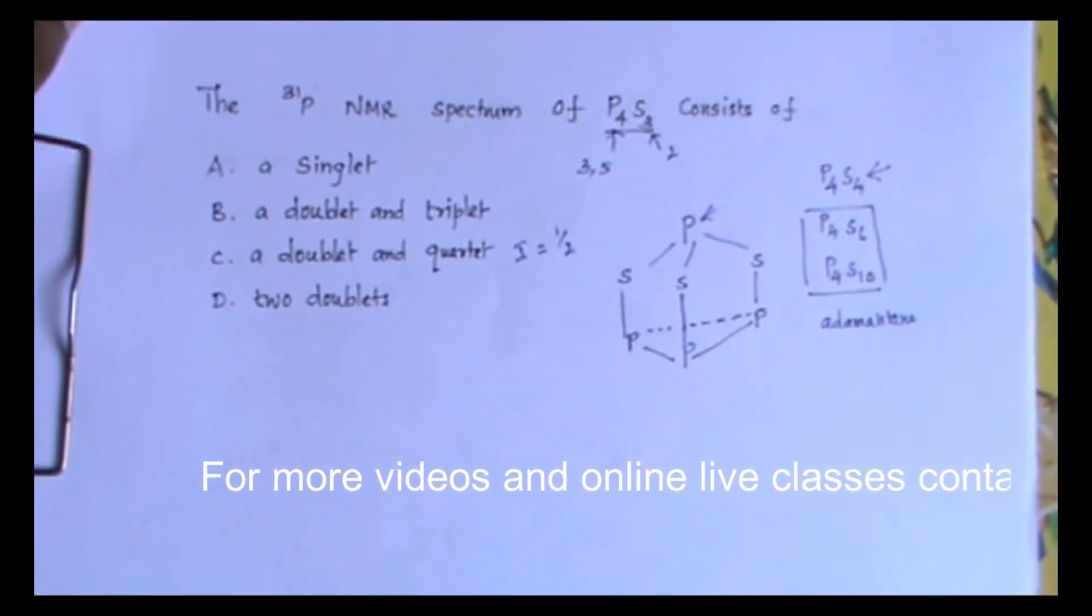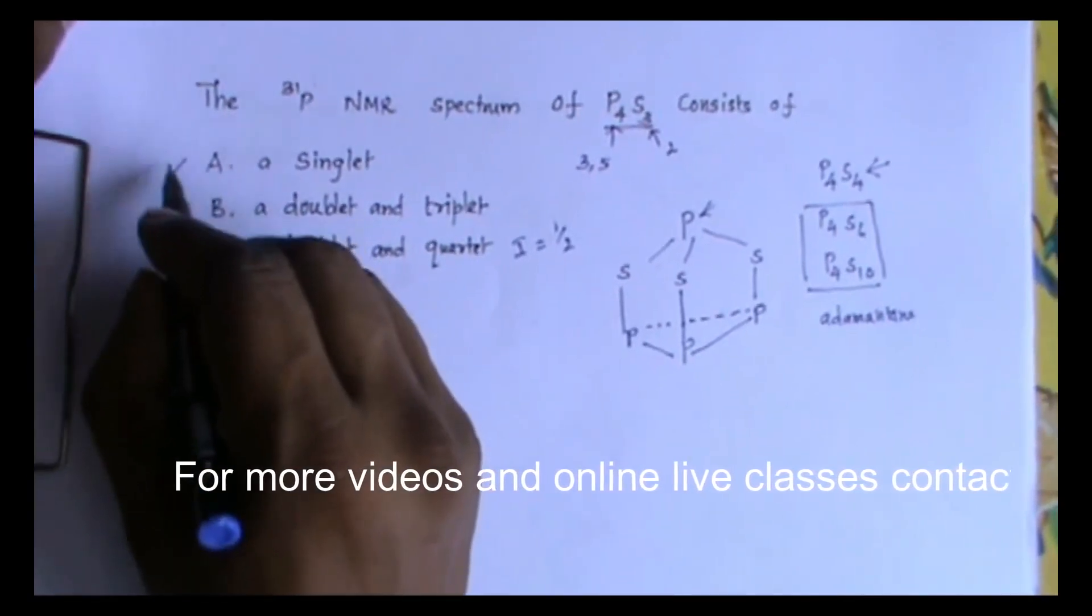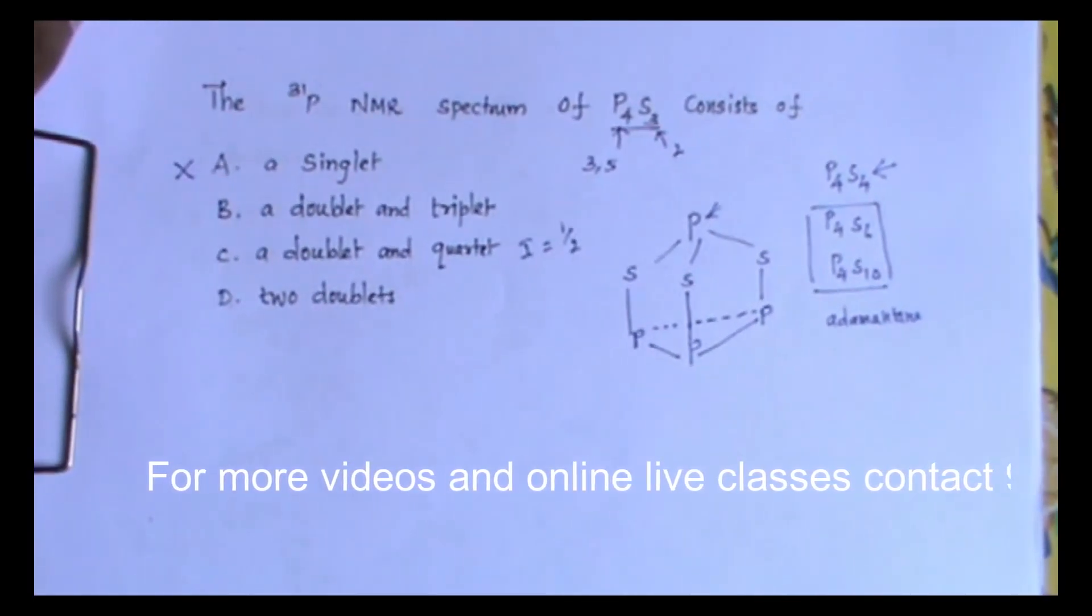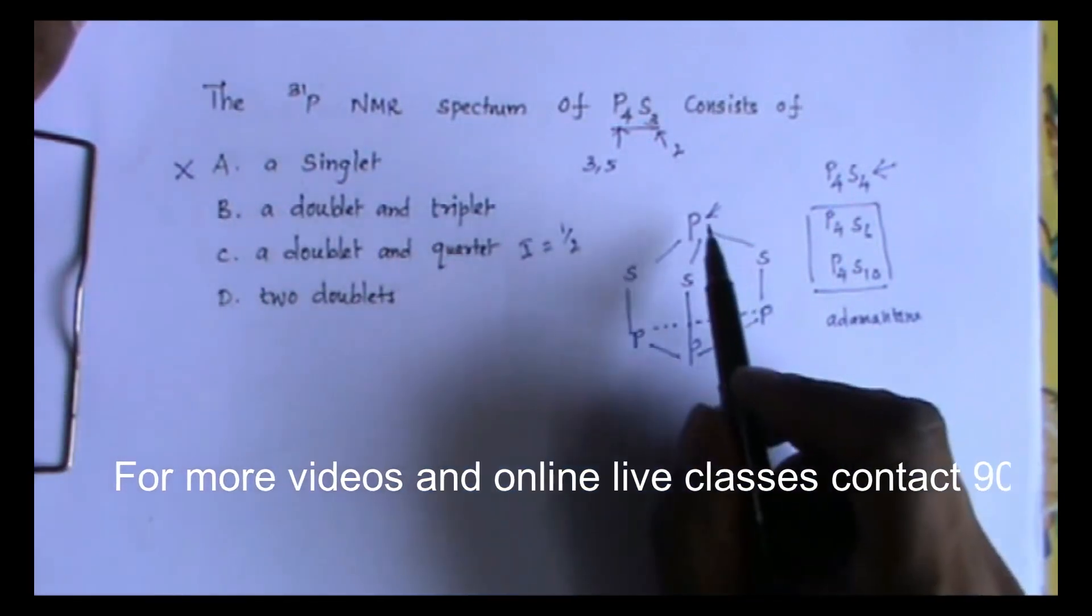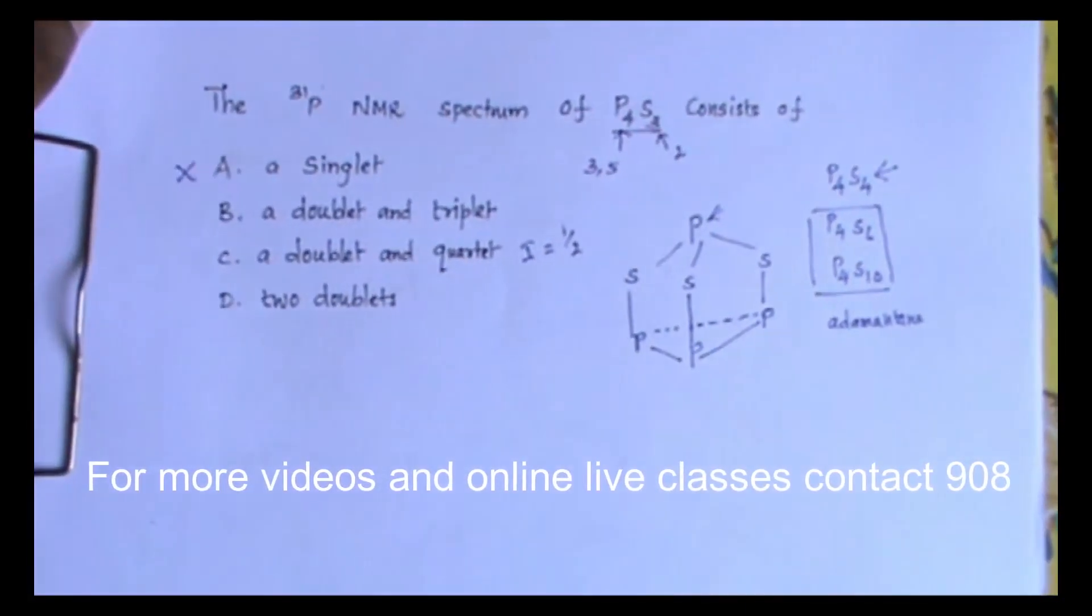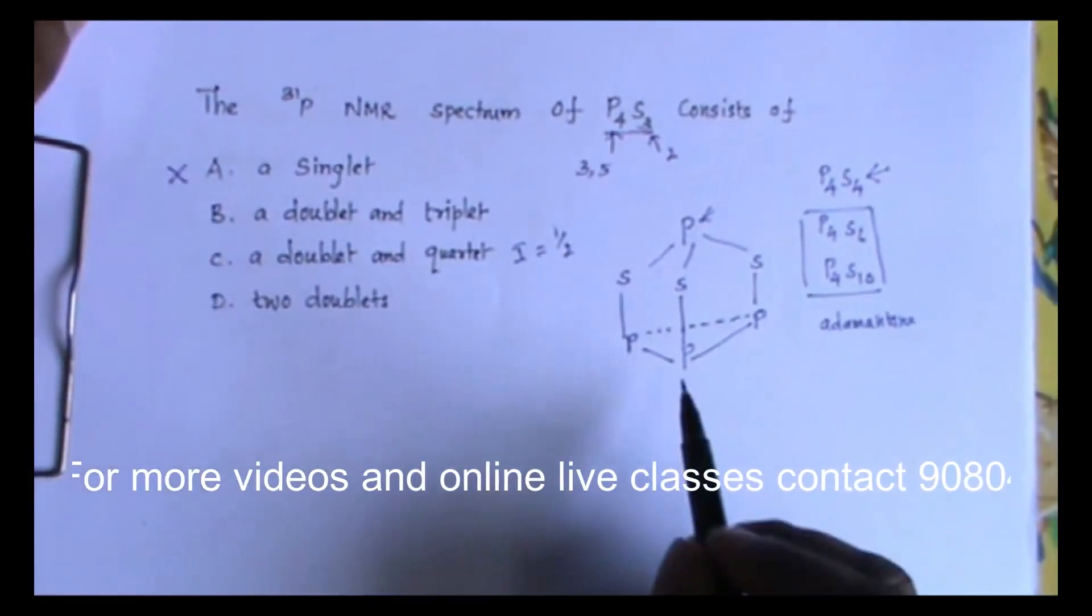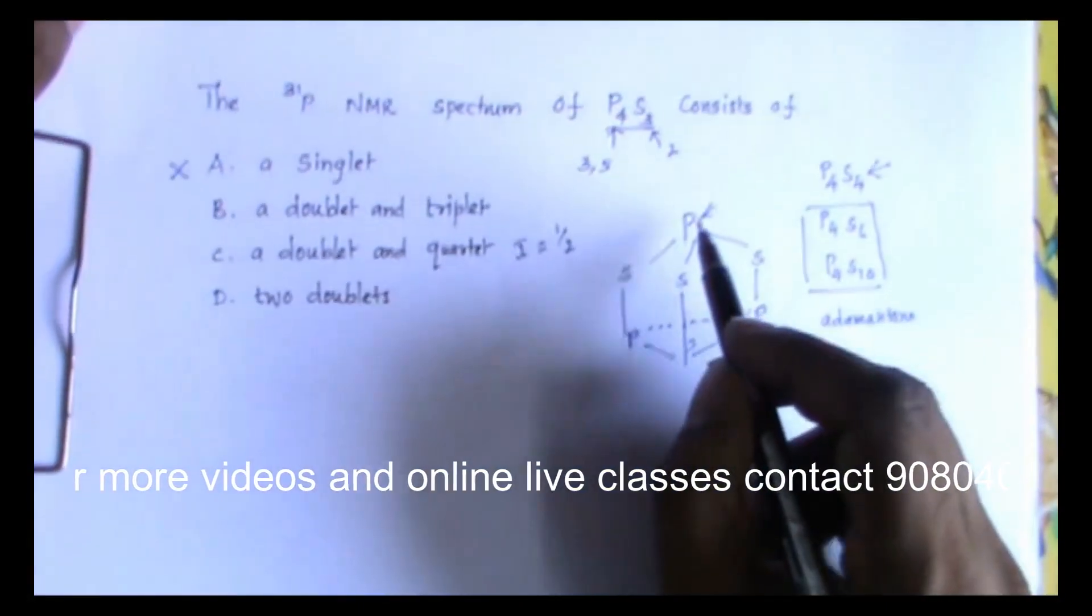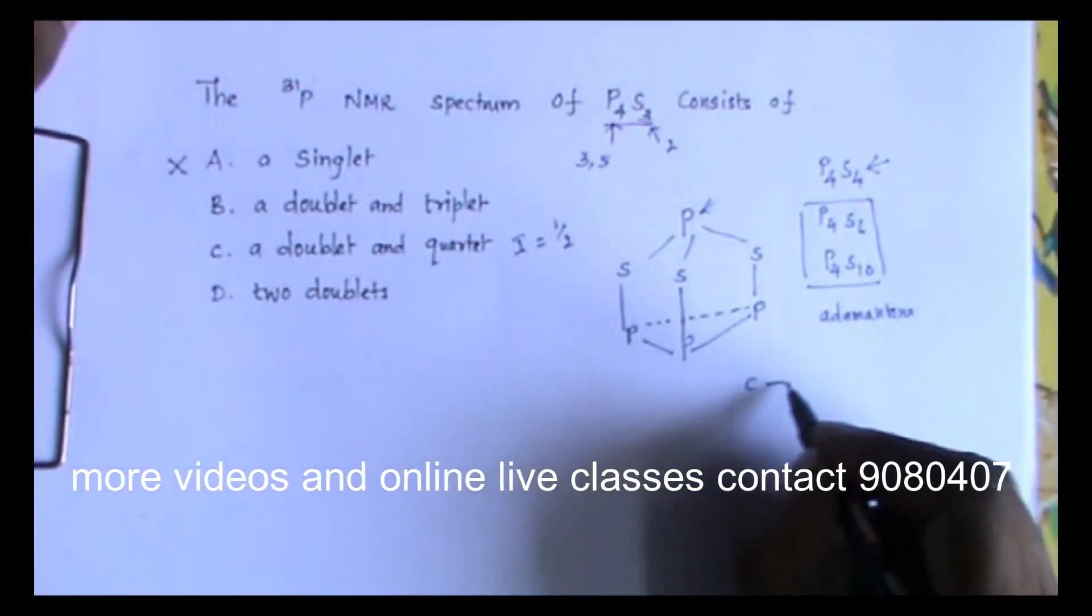So these three are in the same environment and this one is a different environment. So we can expect two different signals for this compound. Based on that I can eliminate the first option. We will get two signals, not only one signal. Now what about the multiplicity of those two signals? This signal will be split by these three phosphorus atoms.